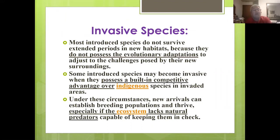Our Asian giant hornet is one of those. Under these circumstances, new arrivals can establish breeding populations and thrive, especially if the ecosystem lacks any natural predators capable of keeping them in check.